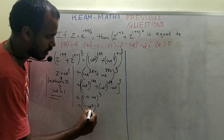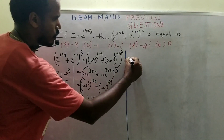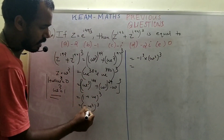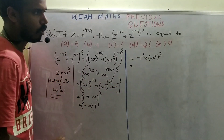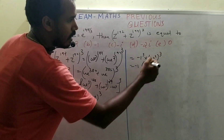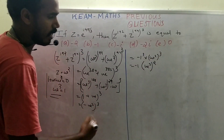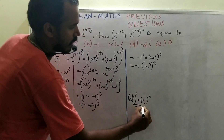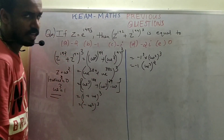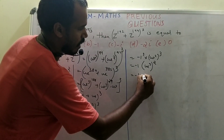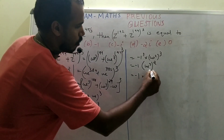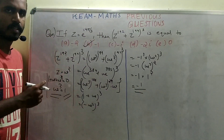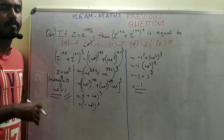So (z^192 + z^194)³ = (1 + ω)³. Since 1 + ω + ω² = 0, we have 1 + ω = -ω². Therefore (-ω²)³ = (-1)³ · (ω²)³ = -1 · (ω³)² = -1 · 1² = -1. The answer is -1, so option B is correct. In the next session we will go to the next set of questions.